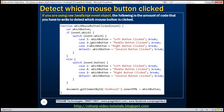We switch on that which property, which is going to return one of three values: one, two, or three. If it's one, we store the message 'left button clicked' in the whichButton variable and break out of that case statement. If it's two, it's the middle button; three means right button. If it's not any of those three values, we fall to the default case and set the variable to 'invalid button clicked'.